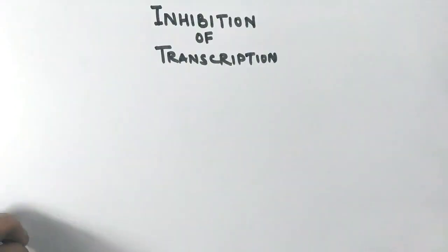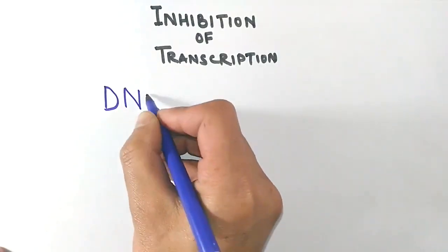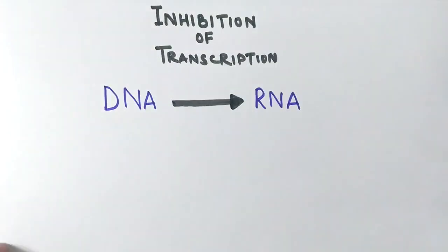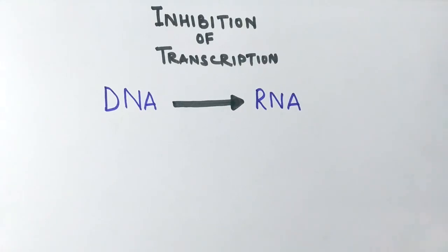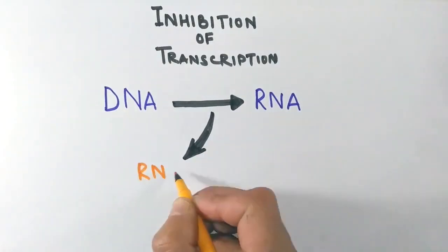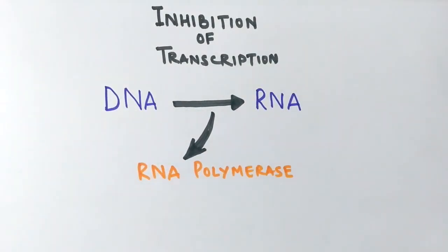The first process we are going to discuss is the inhibition of transcription process. How does the antibiotic inhibit the transcription process of bacteria to halt their action? The information from DNA is transferred to the RNA molecule by the process of transcription, and in this process it is the RNA polymerase enzyme that catalyzes the synthesis of mRNA molecule.